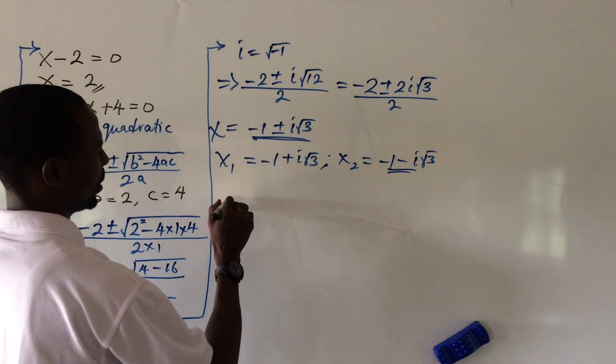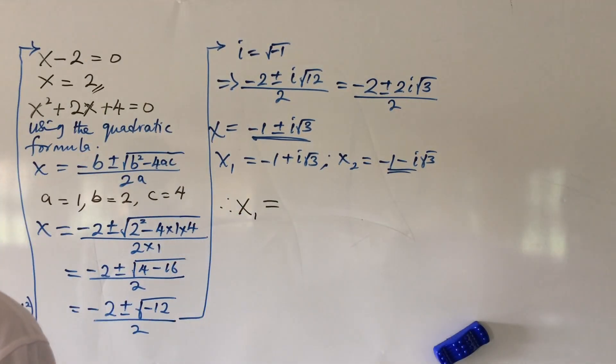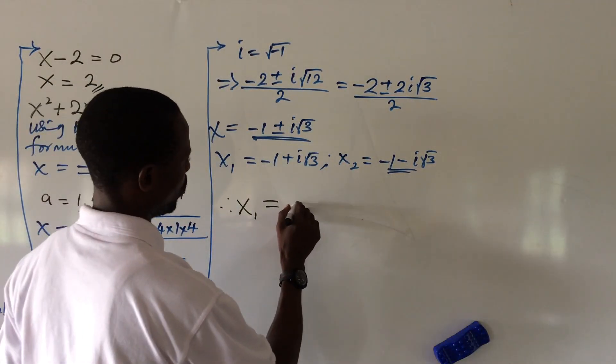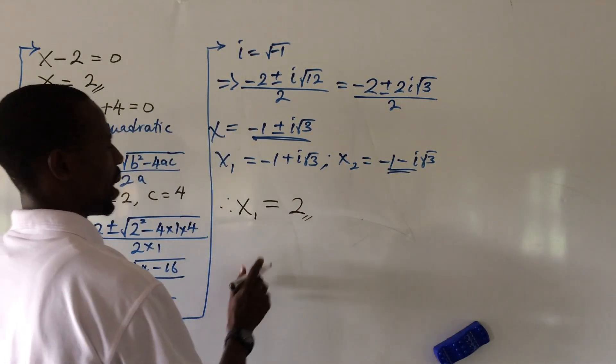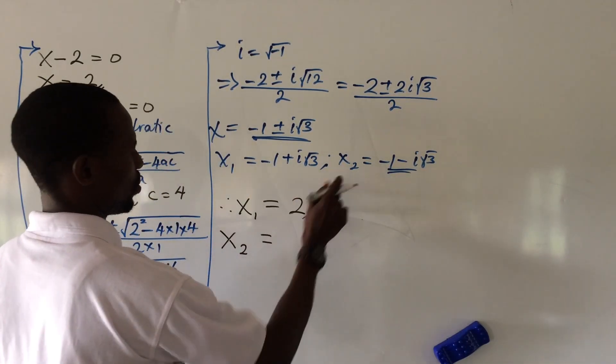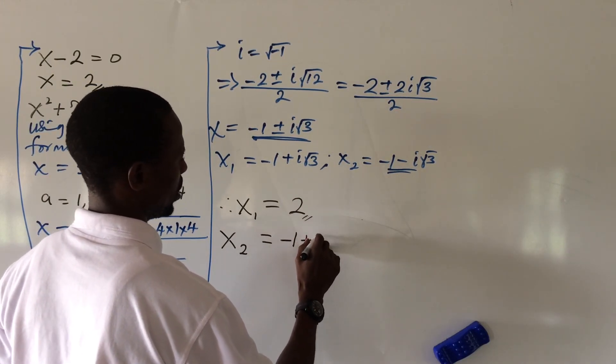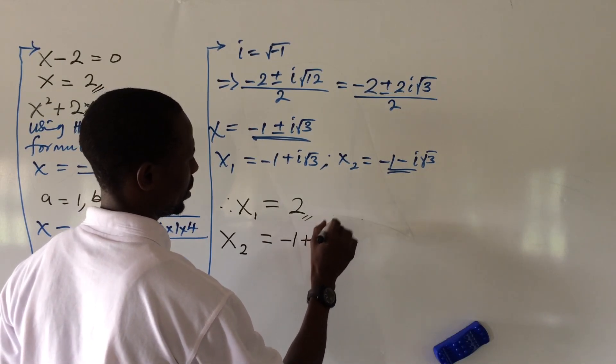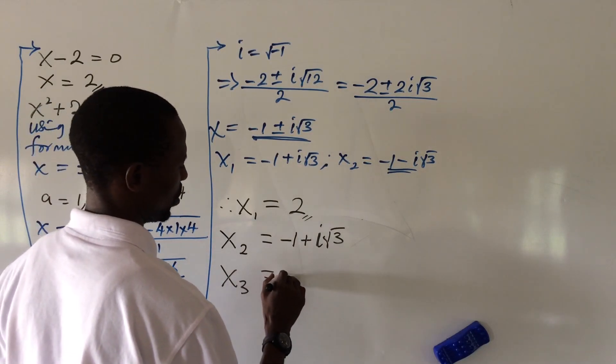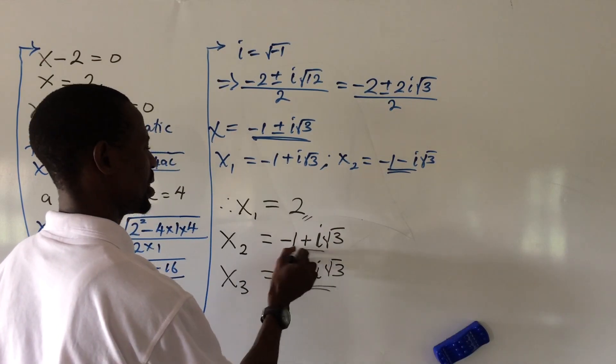Now from here, we're going to therefore see, therefore our x1 is equal to... we'll solve our x1 already from the first side, which is equal to 2. Then our x2 is equal to this is what we have as our x2: minus 1 plus i root 3.